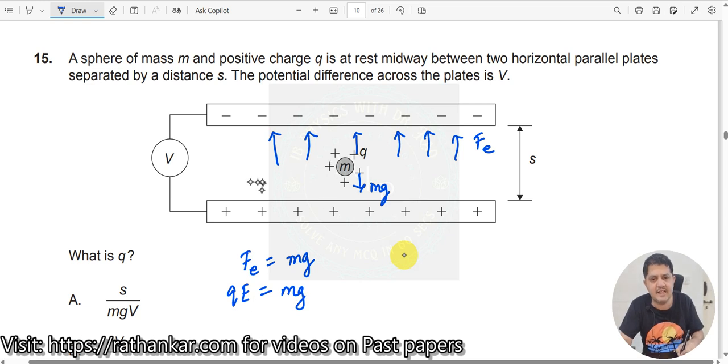What is E? Electric field between these two plates. What is electric field here? Electric field can be written as E equals V divided by D, potential difference divided by the distance between the two plates. What is the distance? S here. So I'll write this as V by S.